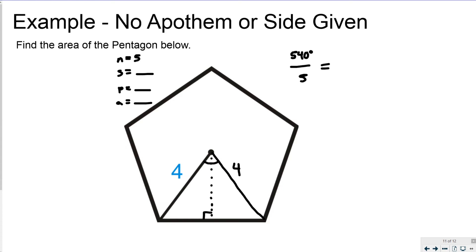Taking 540 and splitting it equally five ways gives 108 degrees per interior angle. Then I take half of that — dividing by 2 gives 54 degrees — so this angle in the right triangle is 54 degrees.